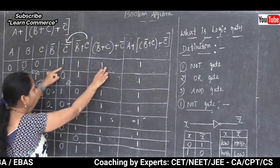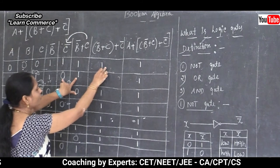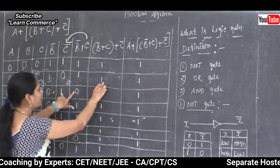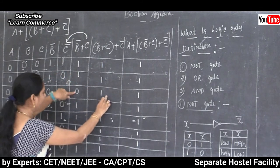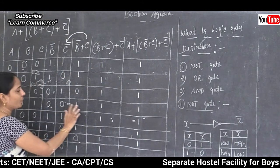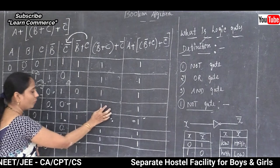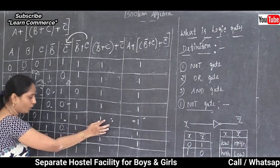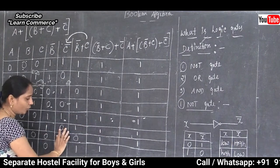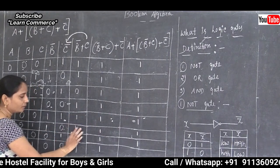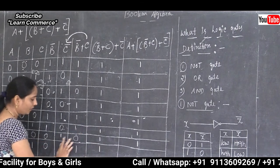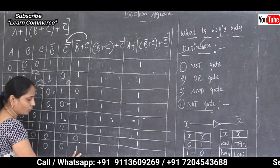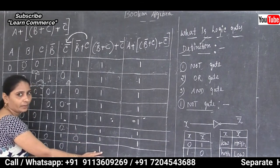Computing (complement C) plus (complement B plus C): 1+1=1, 0+1=1, 1+1=1 (so 1), 0+1=1, 1+1=1, 0+1=1, 1+1=1, 0+1=1. All rows give 1.